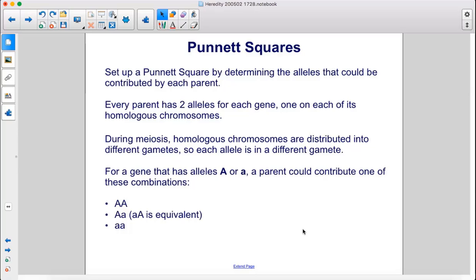Set up a Punnett Square by determining the alleles that could be contributed by each parent. Every parent has two alleles for each gene, one on each of its homologous chromosomes. During meiosis, homologous chromosomes are distributed into different gametes.